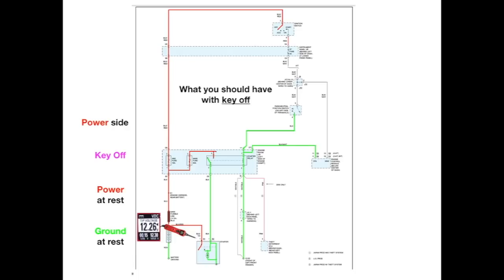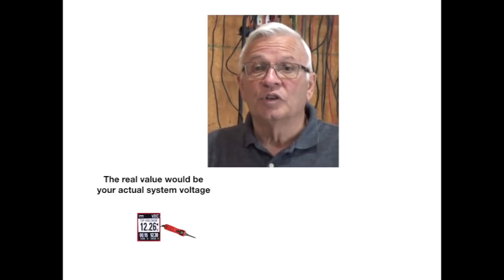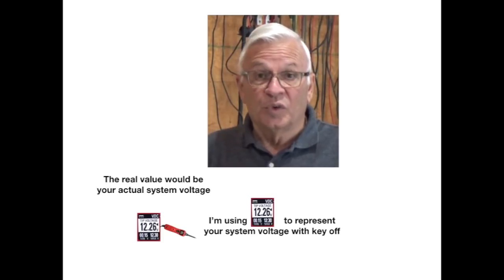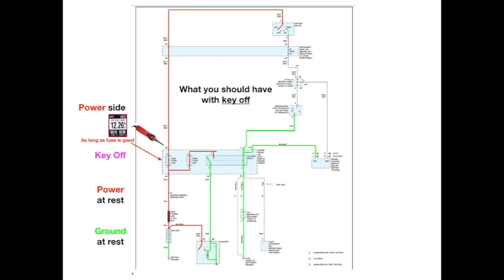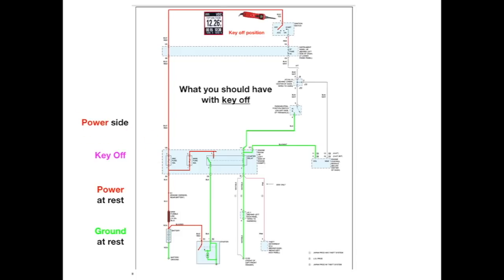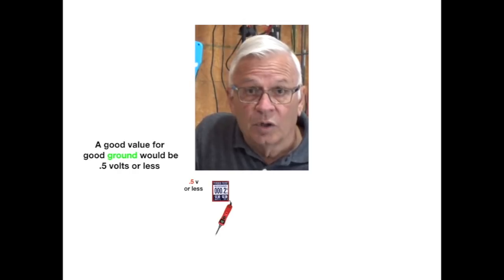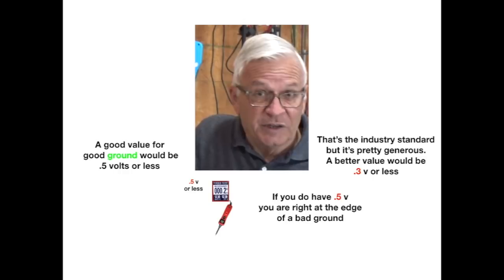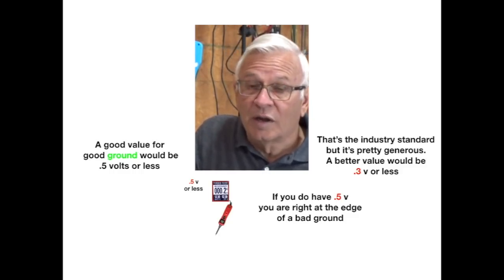On the power side, you should have 12.2 volts — or more precisely, system voltage — at the first test point. The real value to look for is your system voltage with the key off; I'm using 12.2 to represent that. Moving up to the next point, you should again have system voltage as long as the fuse — actually a fusible link — is good. If that link is blown, you would not have power at that point. For the ground side, a good value would be 0.5 volts or less — though 0.3 or 0.2 is better. If you're showing 0.5, you're right at the verge of a bad ground.